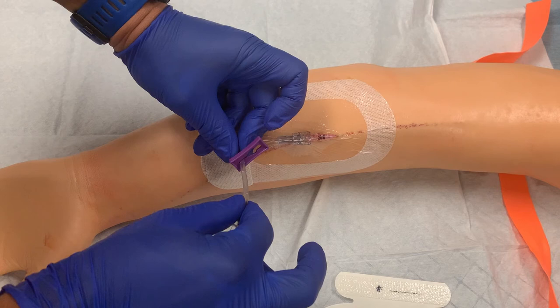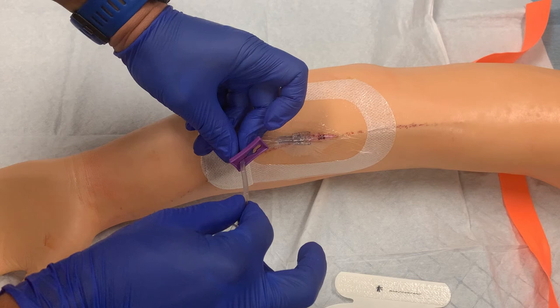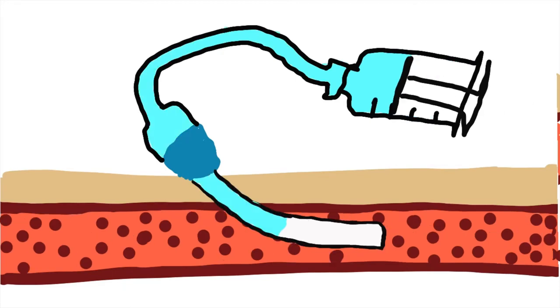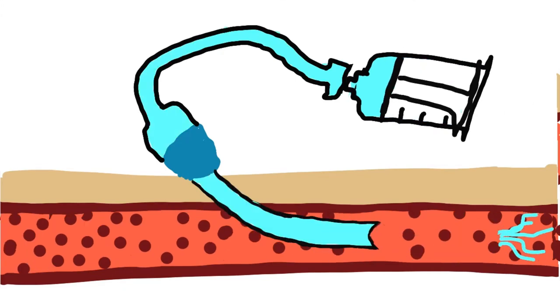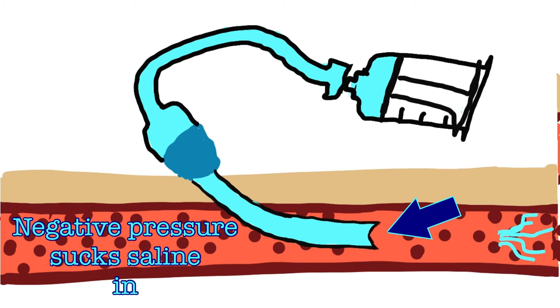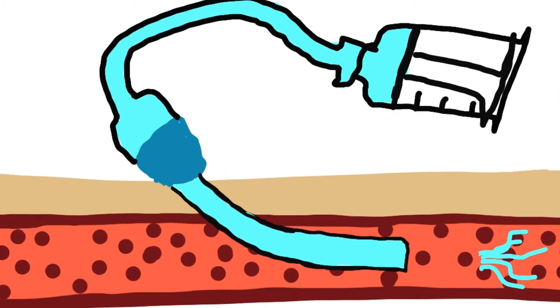But why does this simple thing help make an IV last longer? If you don't close the clamp, when you remove the syringe from the port, it will create a small amount of negative pressure in the catheter because the space occupied by the tip of the syringe will be backfilled by saline.